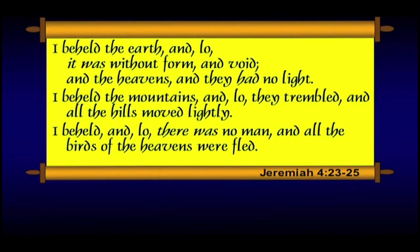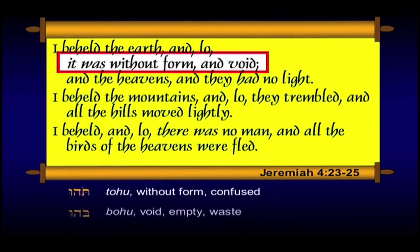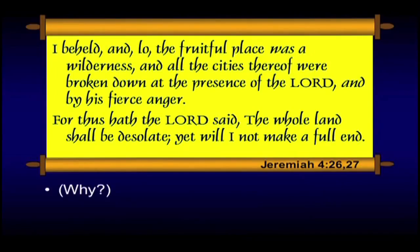When we get to Jeremiah, we find some strange descriptions. Jeremiah 4, starting at verse 23: 'I beheld the earth and lo it was without form and void' — tohu vabohu, the same two words from Genesis 1:2 — 'and the heavens had no light. I beheld the mountains and lo they trembled and all the hills moved lightly. I beheld and lo there was no man and all the birds of the heavens were fled. I beheld and lo the fruitful place was a wilderness and all the cities thereof were broken down at the presence of the Lord by his fierce anger. The whole land shall be desolate, yet will I not make a full end.' A judgment of some kind — and why isn't he making a full end? He must have some plan in mind.